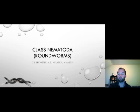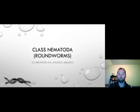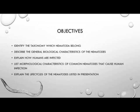Hello and welcome to Parasitology and Mycology. This is the first of three presentations covering class Nematoda, the roundworms. The objectives we're going to cover include identifying the taxonomy which Nematoda belong, describing the general biological characteristics of the nematode, explaining how humans are infected, listing morphological characteristics of common nematodes that cause human infection, and explaining the life cycle of the nematodes listed in this lecture series.